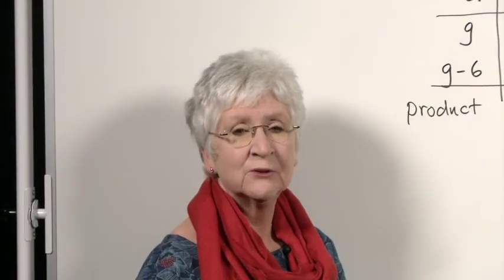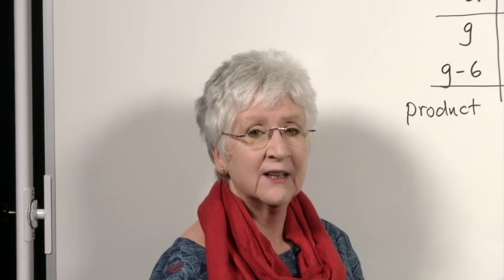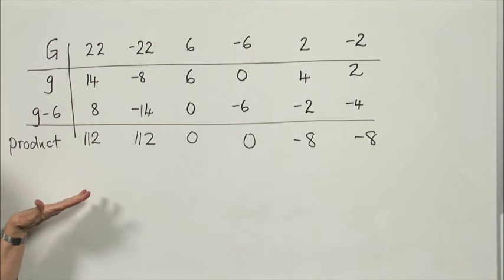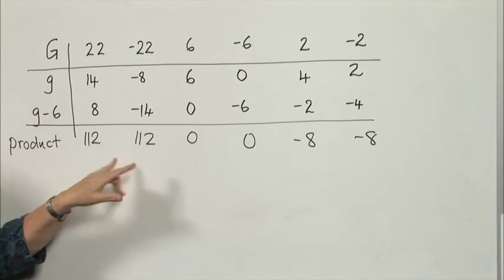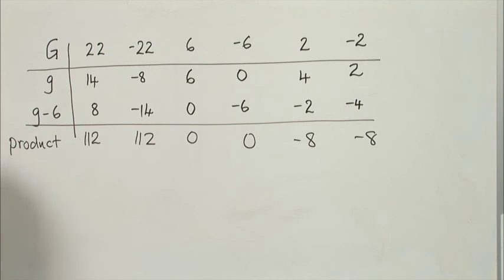And lastly, we want to check that Grace's numbers actually exist. And when we go through the same equations, we get this table here for Grace, and we see we get the same product: 112, 0, and negative 8. There are three solutions to this problem.